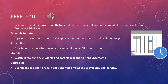You can compose an announcement, schedule, and forget it. This helps with scheduling games, practices, or other events. You can attach files as photos, documents, presentations, and PDFs. This helps when you want to give students or athletes information on the game, such as stats or a schedule. You can send stamps and watch your real-time student and parent responses to an announcement. You can also include voice clips and use the mobile app to record and send voice messages to students and parents.